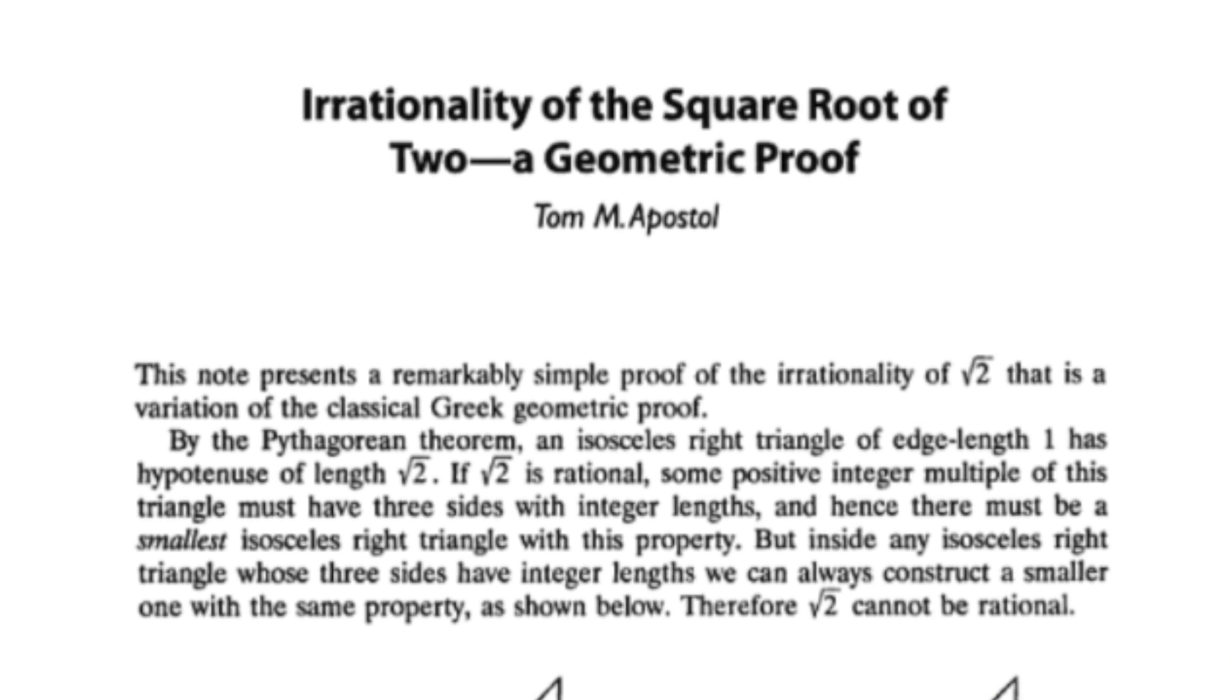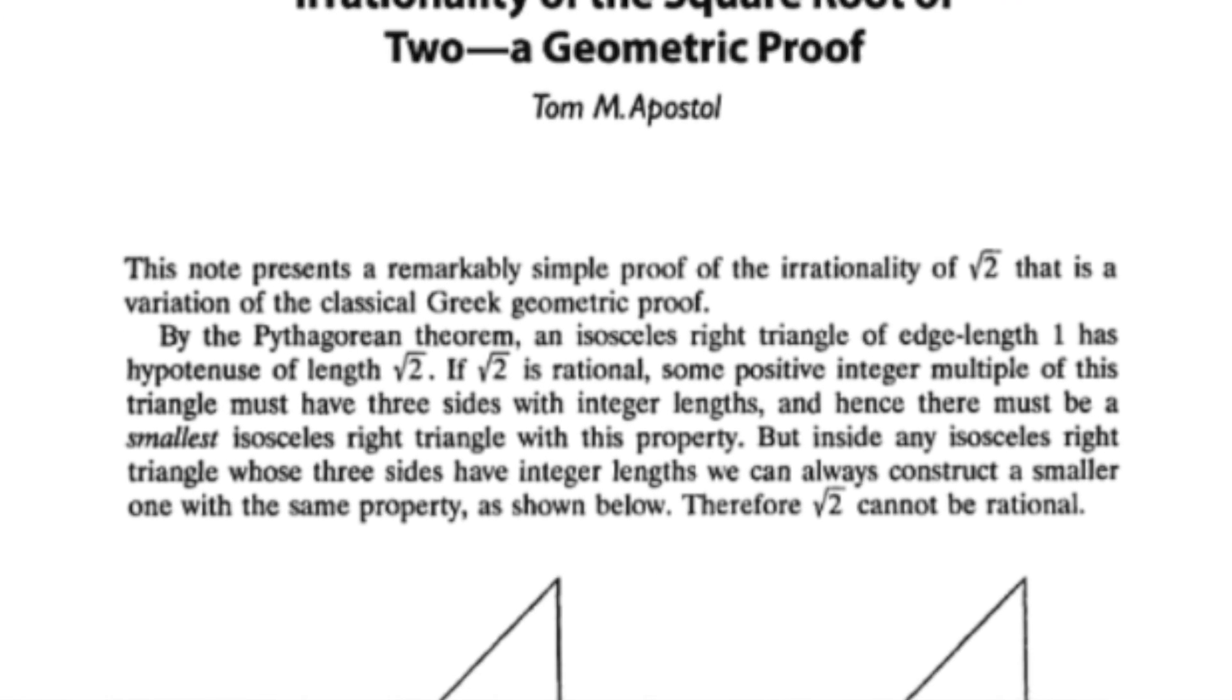Besides being a geometric proof, this is also a proof by contradiction. It starts by assuming that the square root of 2 is a rational number, so that we can write